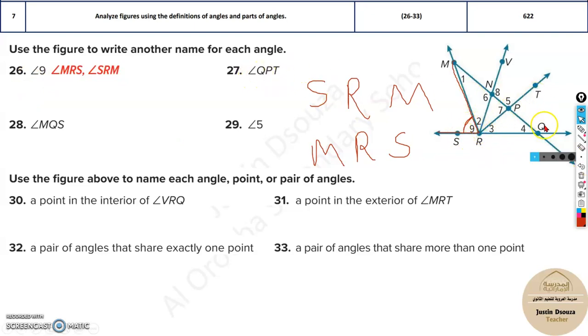Similarly, angle QPT - Q, P and T, that's over here. Now which are the names for this particular angle? There is no angle number over here, so we can only tell by points. TPQ must be the answer over here, that's it.